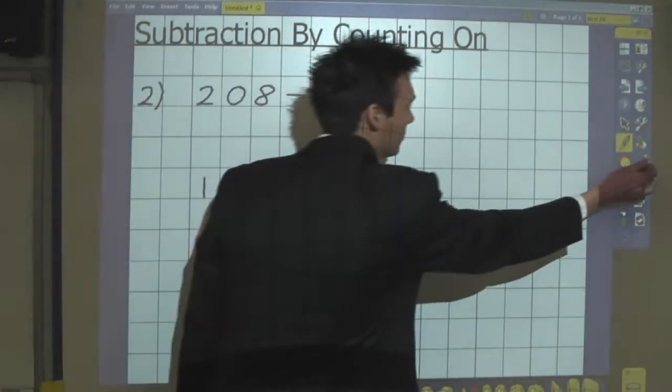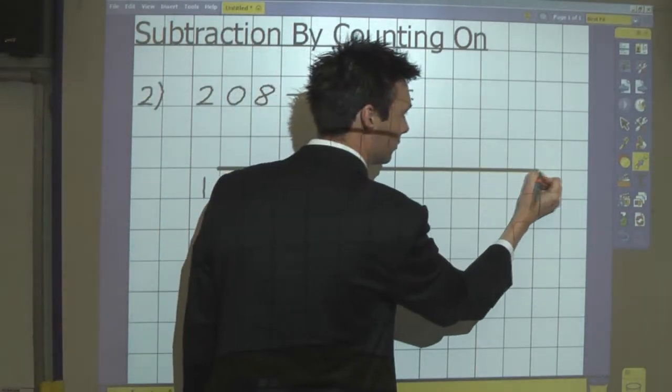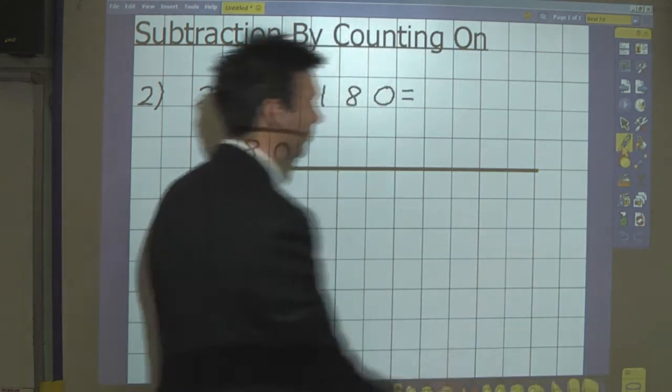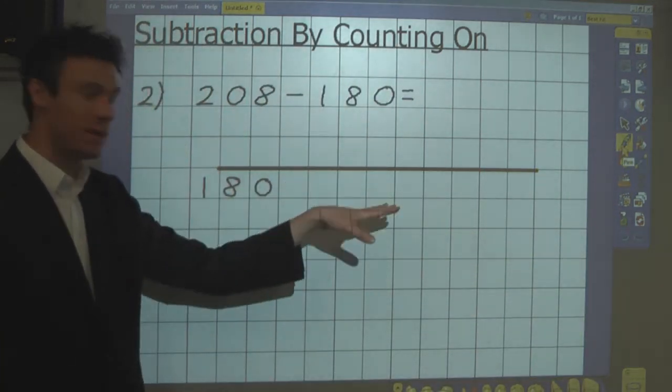And I draw the number line. And I write the number I'm counting up to on the right hand side.